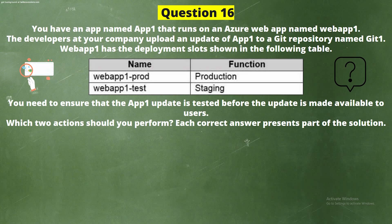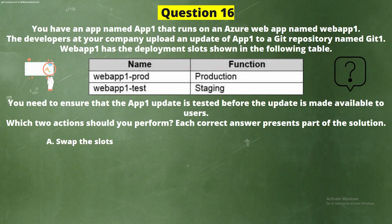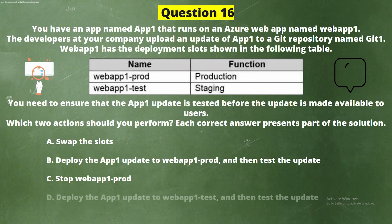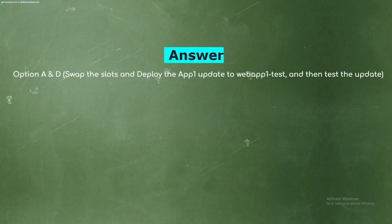Question 16. You have an app named App1 that runs on an Azure web app named Web App 1. The developers at your company upload an update of App1 to a Git repository named Git1. Web App 1 has deployment slots shown in the following table. You need to ensure that the App1 update is tested before the update is made available to users. Which two actions should you perform? The correct answer is Option A and D.